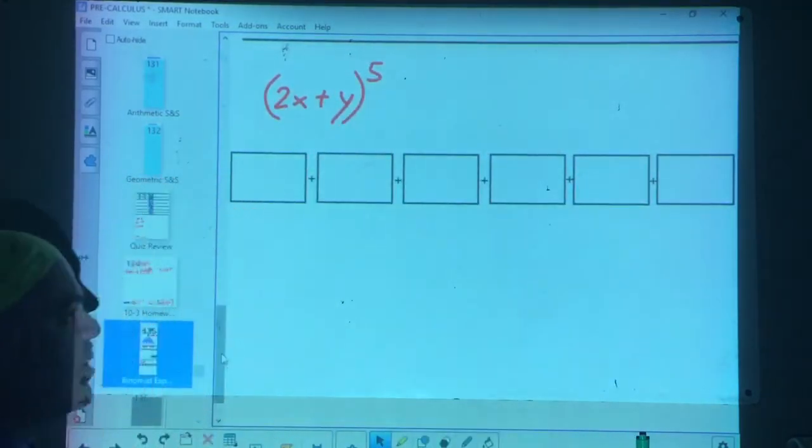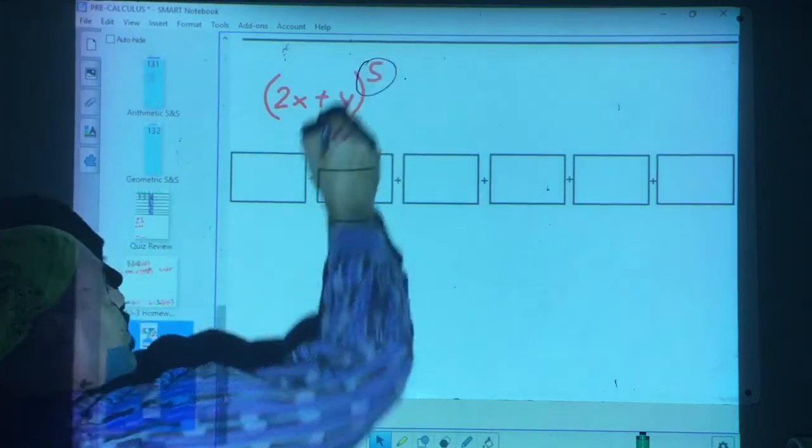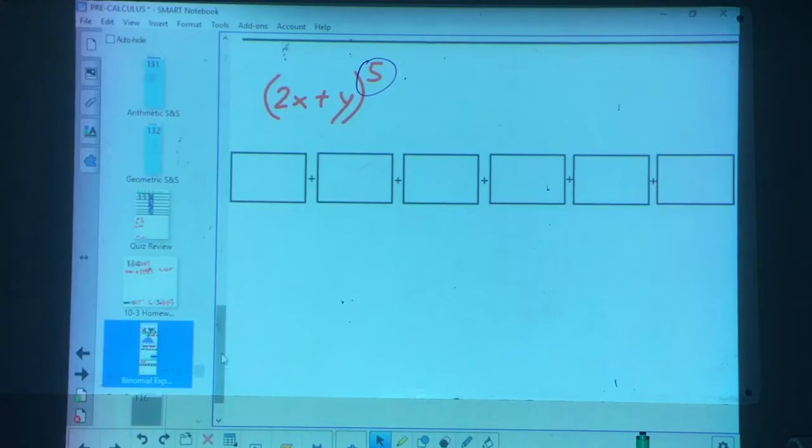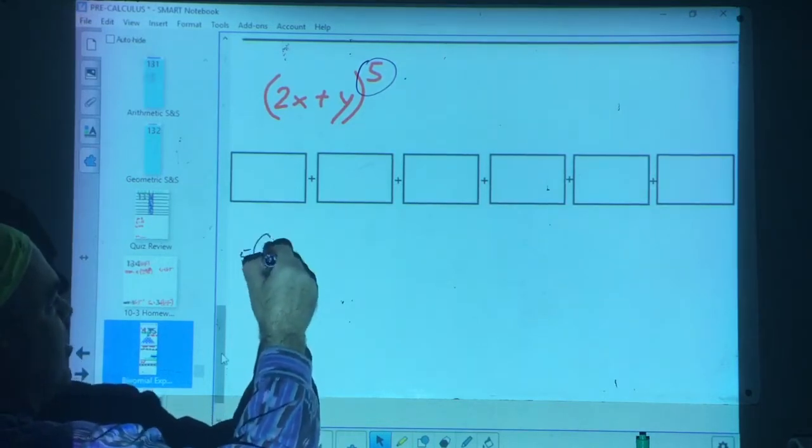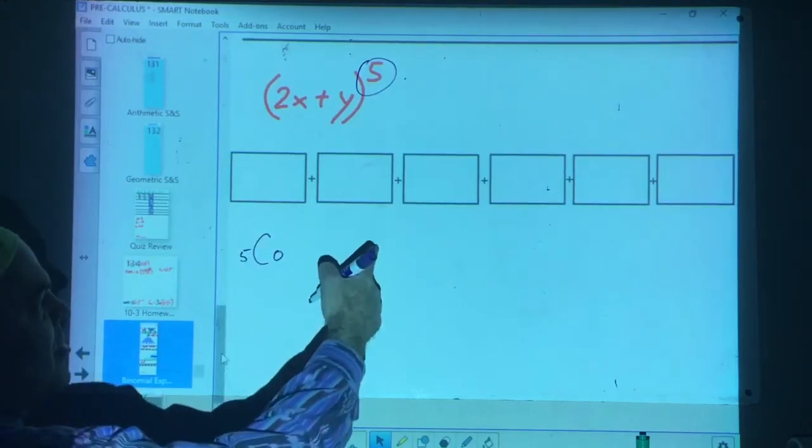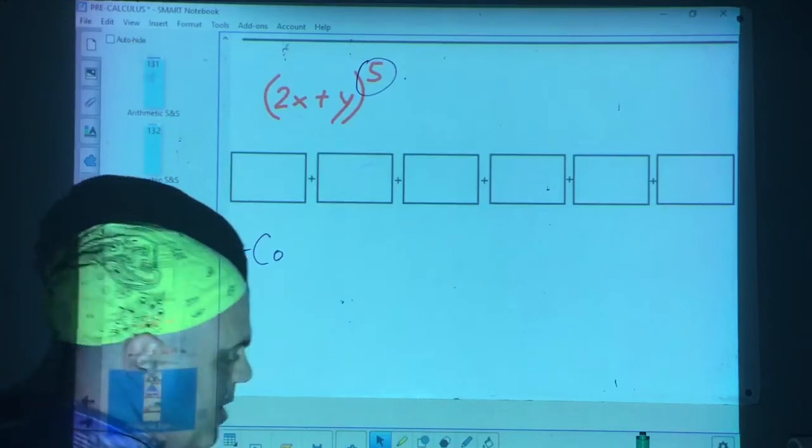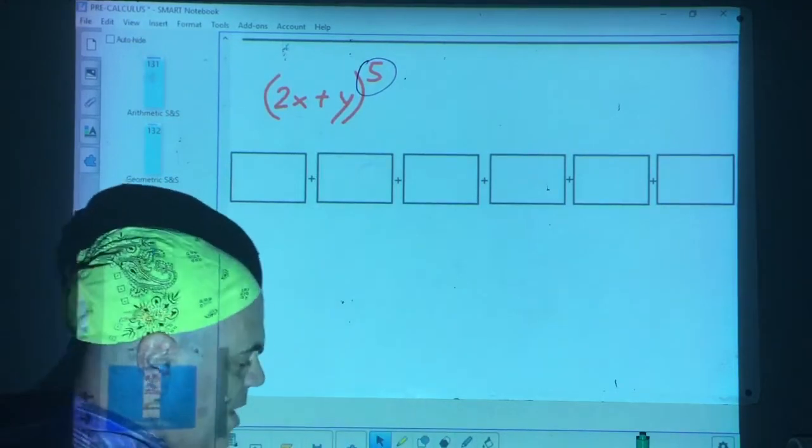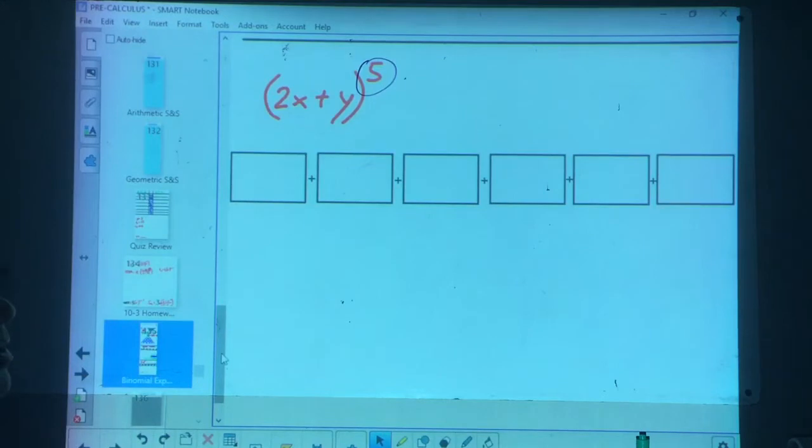I figured we'd do one of these full on. And that'll do it. Let's say I give you a monster like this, 2x plus y to the fifth. First of all, that's the magic number. So, we're going to go to row five of Pascal's triangle. Or, type in what? 5C0, 5C1, 2, 3, etc. And remember this. There's always one more term than the magic number. Notice there are six boxes here. And that's a five.